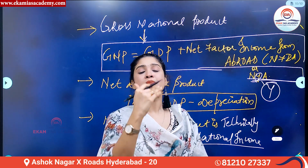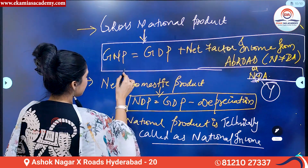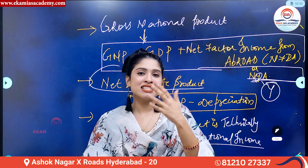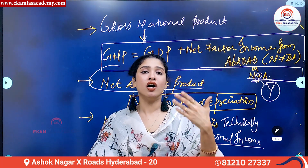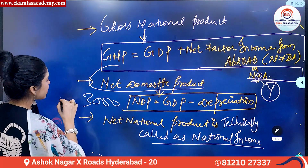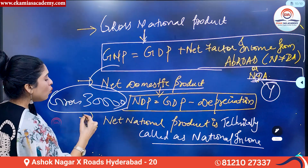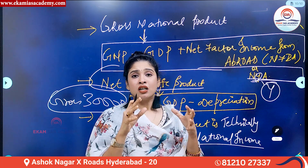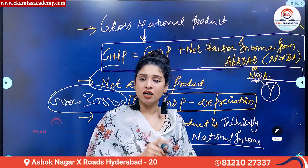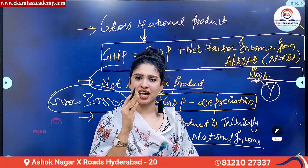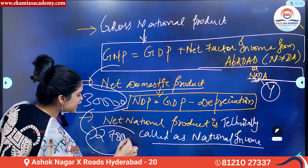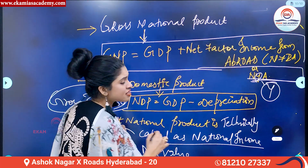The next important topic is net domestic product. So far we've been discussing 'gross' values. For example, a person has 30,000 rupees as their salary — that 30,000 rupees is called the gross amount. Once the salary gets credited, you are eligible to pay tax, which gets deducted by the employer as TDS (Tax Deducted at Source). So you may get only 27,000 rupees in your account, which is called the net value or net amount.